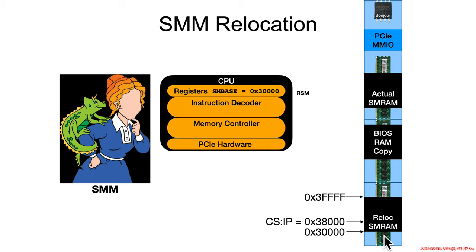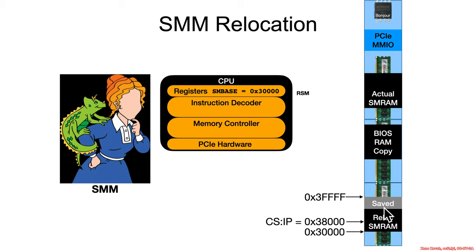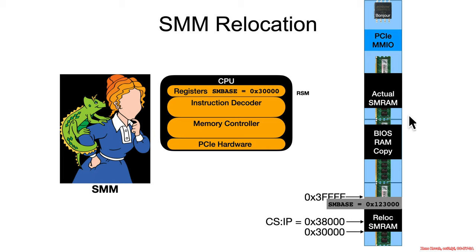What does this first initial relocating SMRAM do? It starts at 0x38,000 — the IP is 0x8000 and the base is 0x30,000, so the entry point is at 0x38,000. What it's going to do is take the save state from before SMM was running and rewrite it with a new SMBase value pointing to the location of the actual later SMRAM.